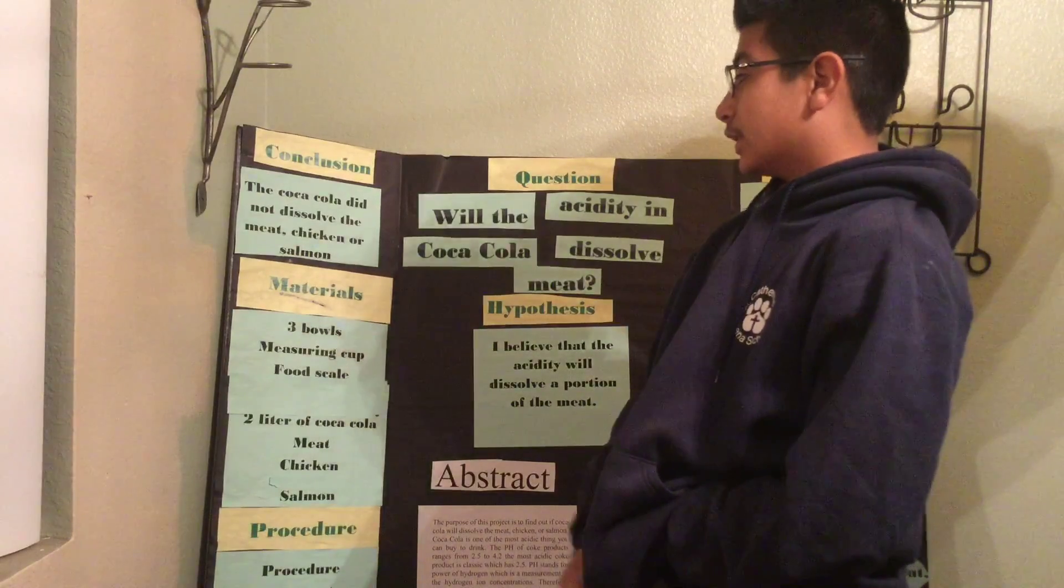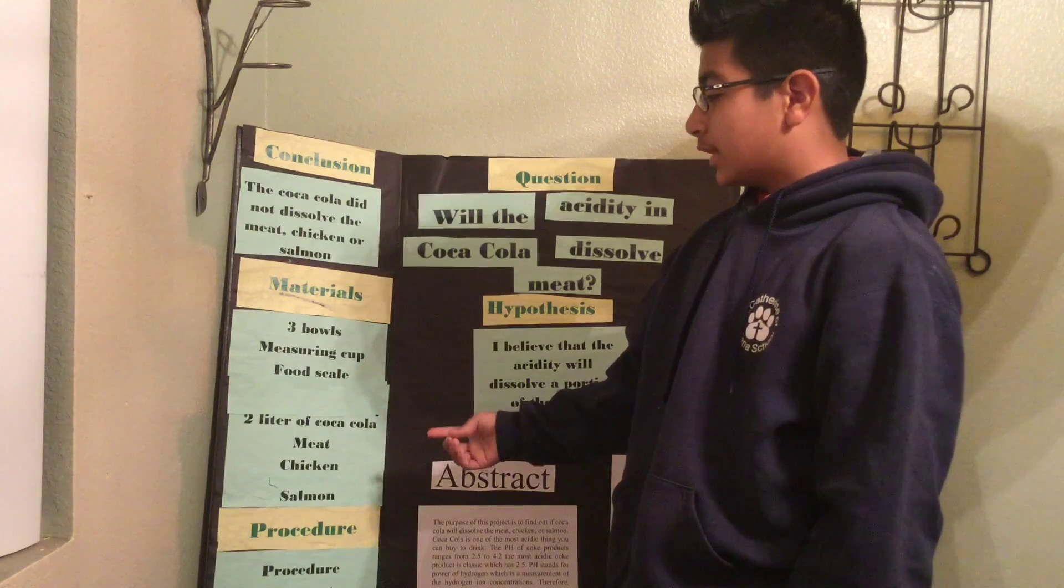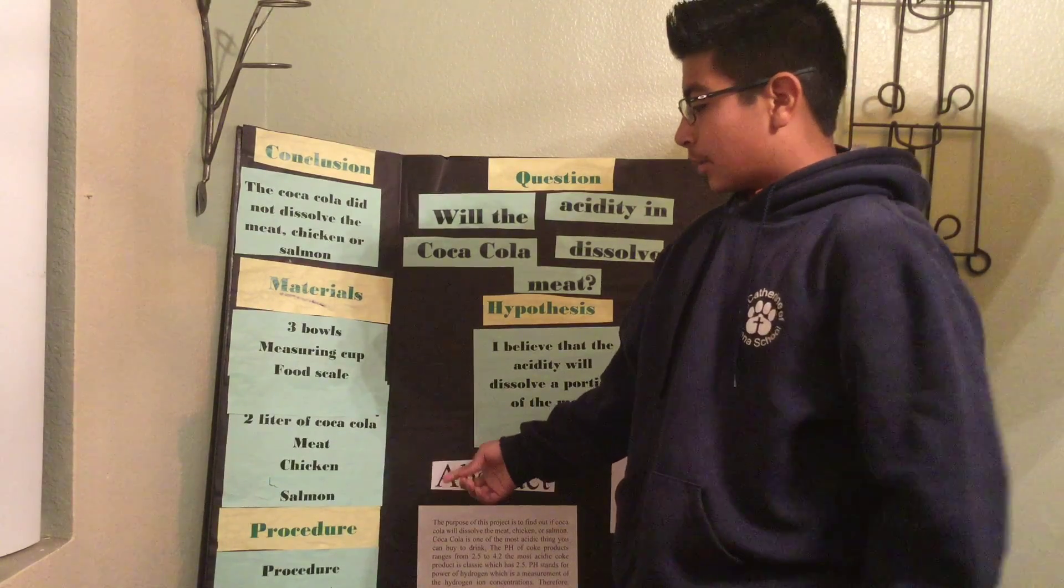My materials are three bowls, measuring cup, food scale, two liters of Coca-Cola, beef, chicken, and salmon.